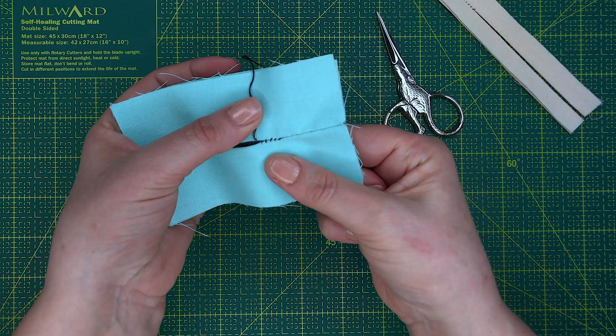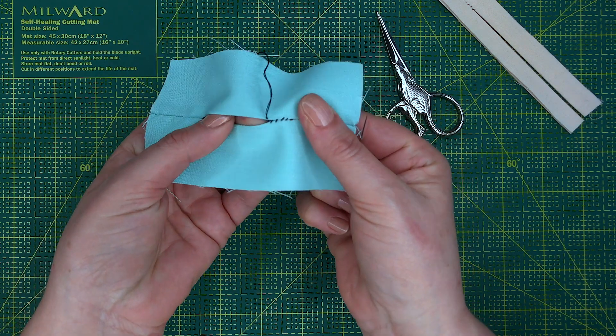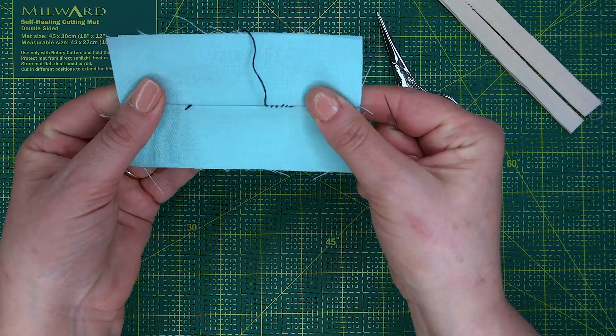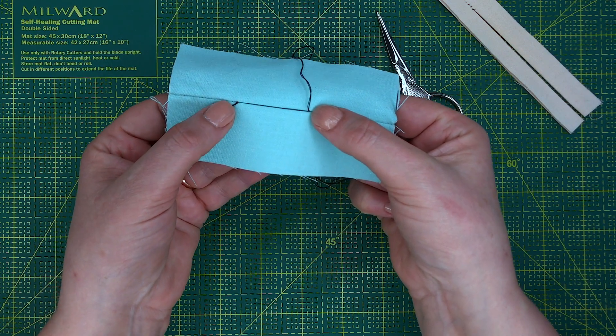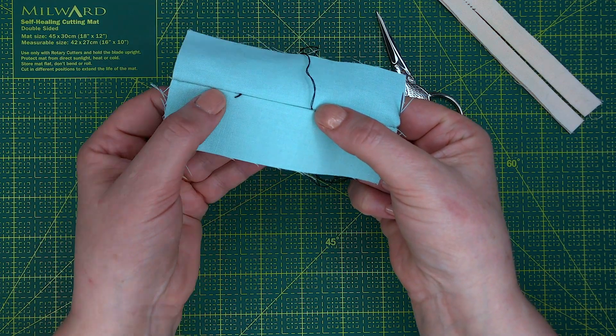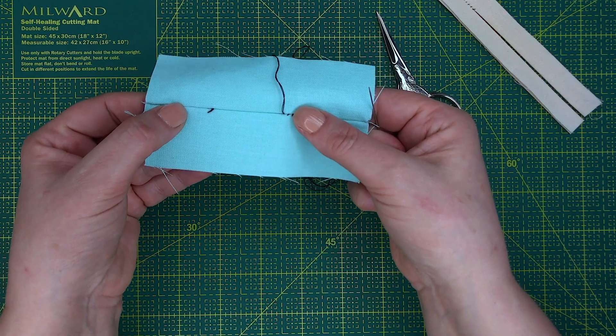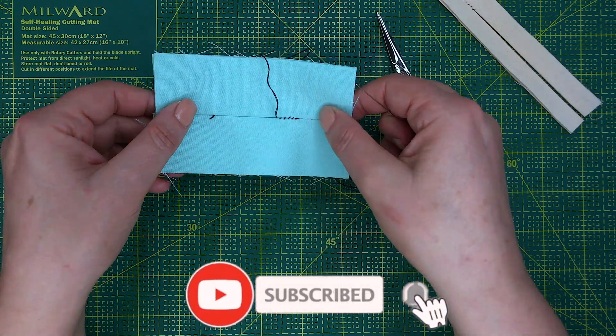And that closes up the hole, the gap that's left, and then you just continue on to the end and run the thread through the back, do a back stitch into the seam, and that's the whip stitch finished.